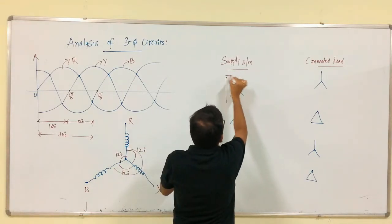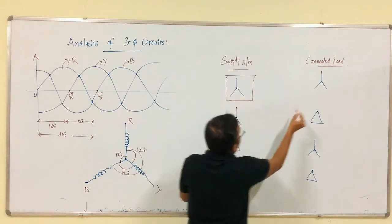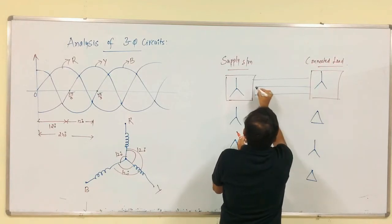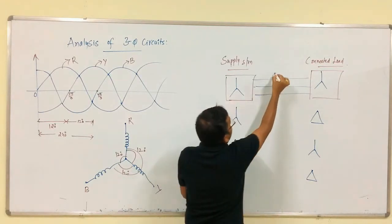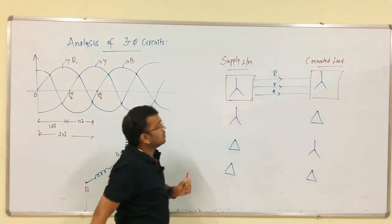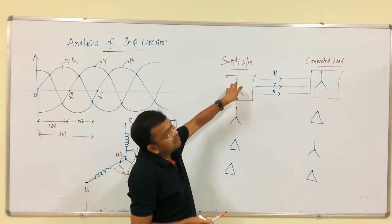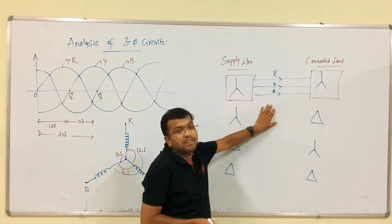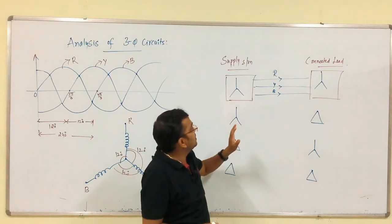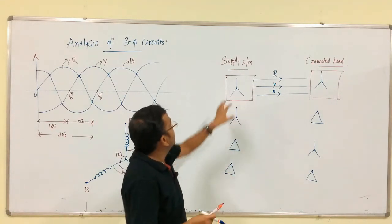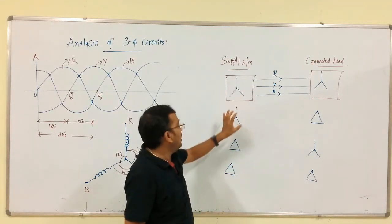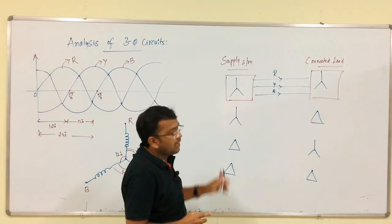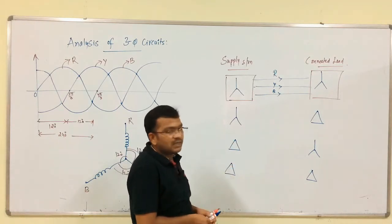We have a star connected supply system and star connected load with three phase lines — phase R, phase Y, phase B. From this star connected supply system to the load we have transmission lines R phase, Y phase, B phase. We have to discuss the basic criteria: star connected supply system or load, delta connected supply system or load.